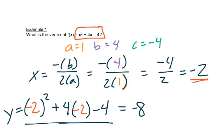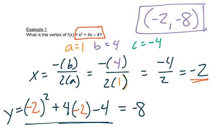And this is really a y value. So now we have our x and our y, we write that as a point, x first, y second. And that's our vertex.